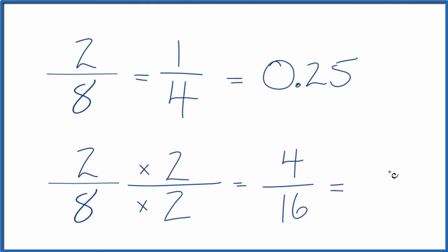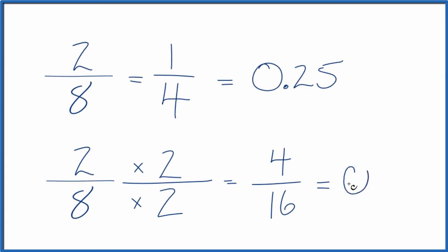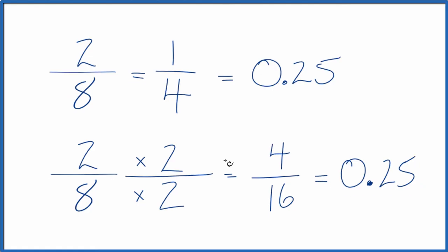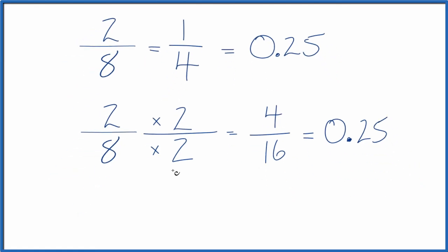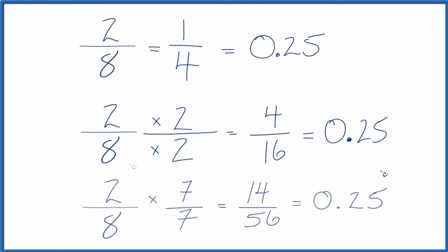And if you divide 4 by 16, you get 0.25 — same as before. For one last one, we could multiply 2/8 by 7 over 7, which is 1. That gives us 14/56, which is another equivalent fraction for 2/8.